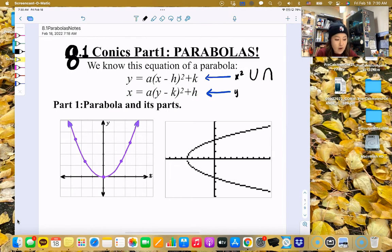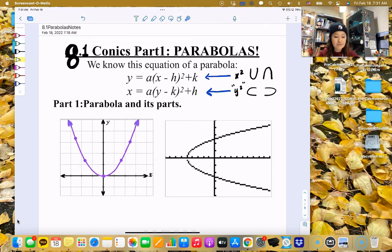So easy peasy, everyone. It's y squared, so it's gonna be different. How? It's gonna go either this way and this way, or this way and this way. So it's kind of like a parabola that's been tipped over, like you knocked it down.